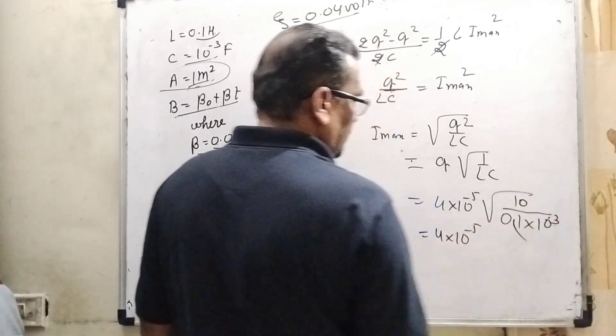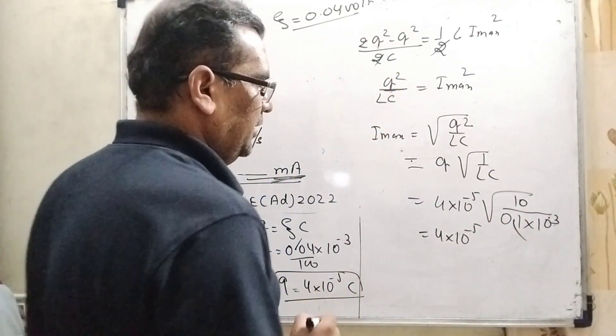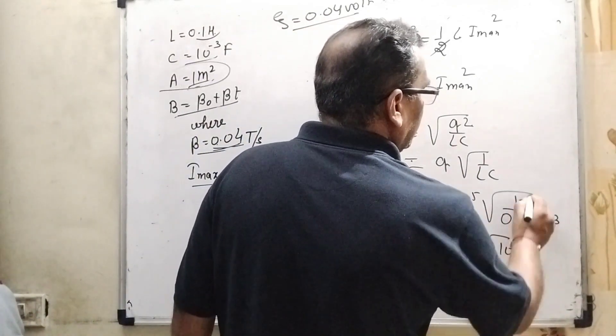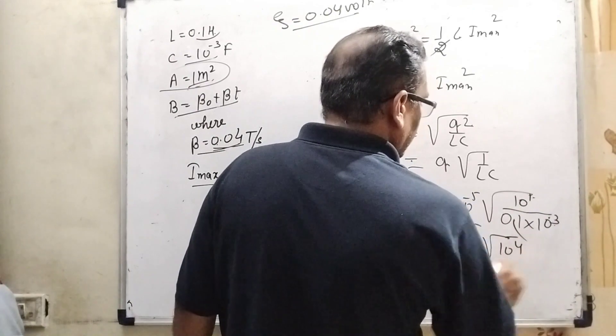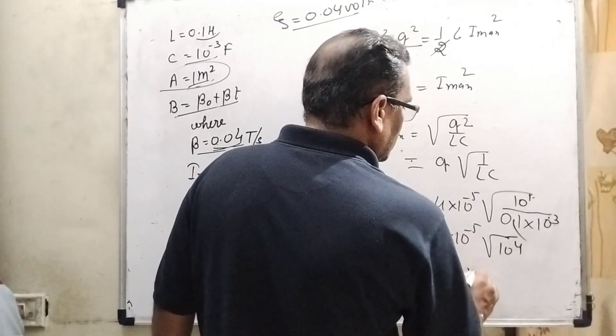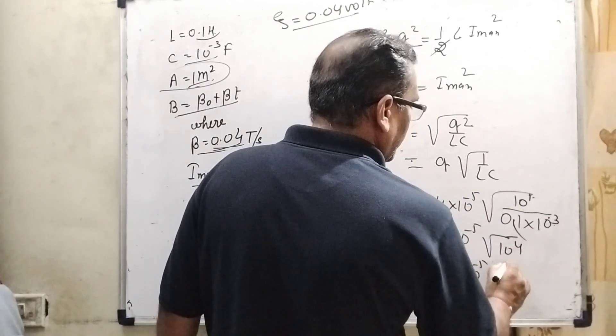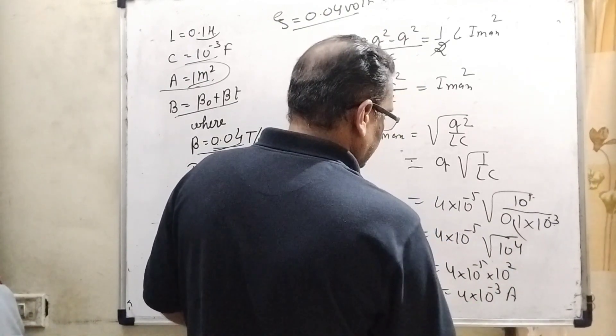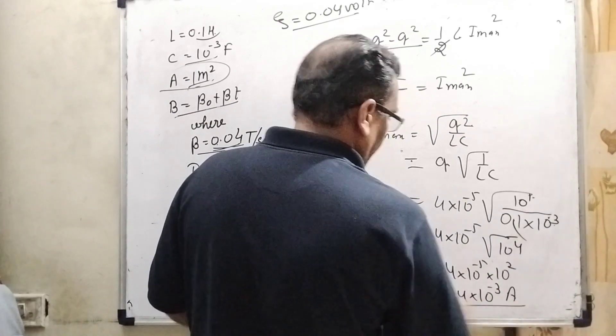Then it can be written as 4 into 10 raised to power minus 5, 10 raised to power 2. Then 4 into 10 raised to power minus 3 ampere. That is maximum amount of current.